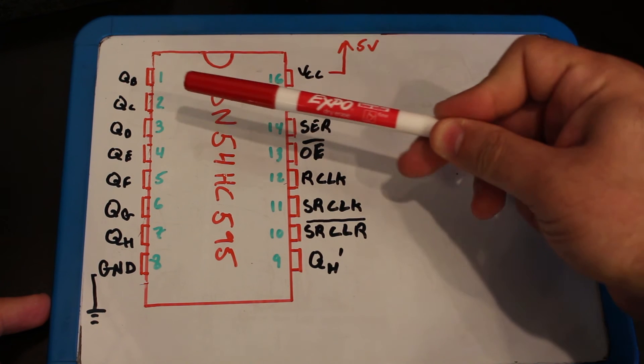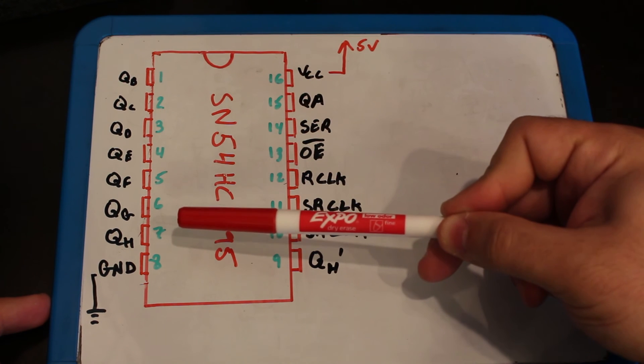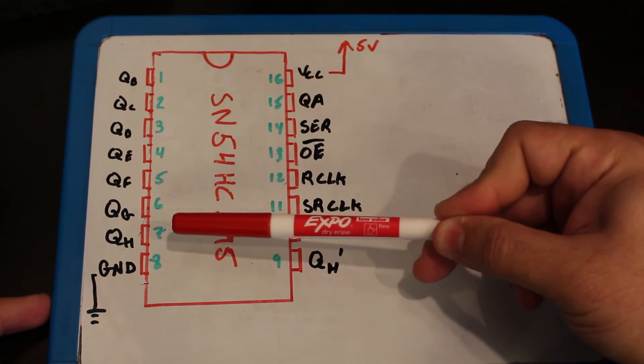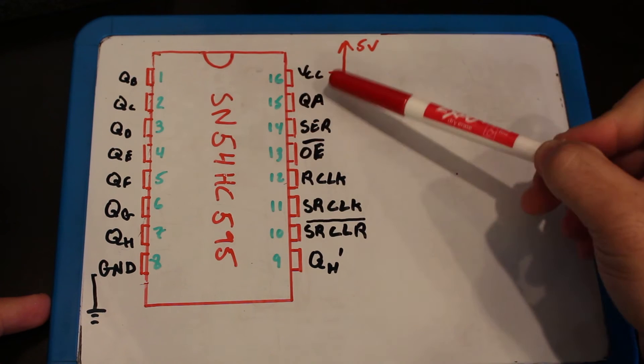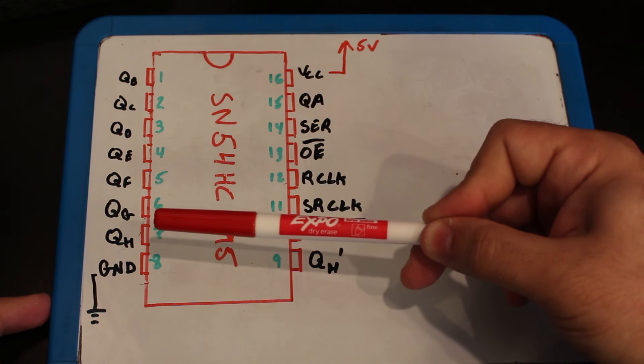Pin 15, 1, and up to 7 will be your shift register outputs, the ones that actually control the LED in our demo. So it's QA, QB, all the way to QH.